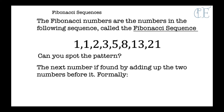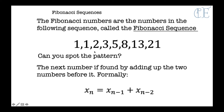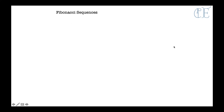The next number is found by adding up the two numbers before it. So 1 add 1 makes 2, 1 add 2 makes 3, 2 add 3 makes 5, 3 add 5 makes 8, and so on all the way up the Fibonacci sequence.